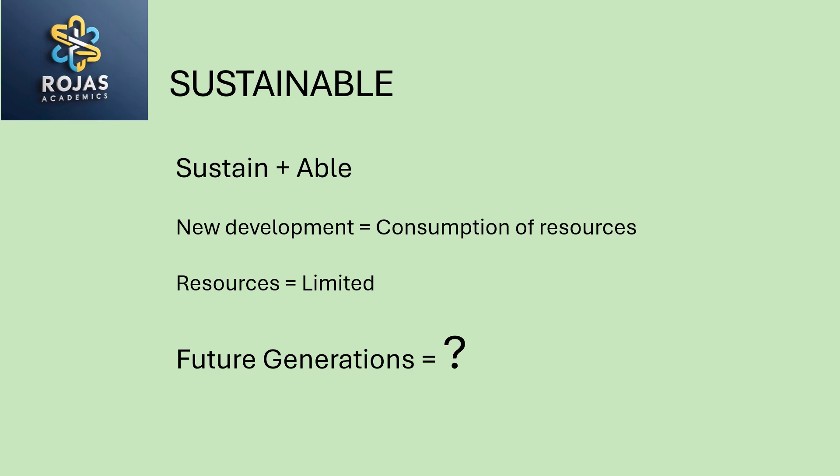So friends, what do you mean by the word sustainable? Word sustainable se aap kya samajhte hain? As you can see, the word sustainable is made up of two words — sustain plus able. Means, which is able to sustain itself for a long time. Jo apne aapko lambe samay tak sustain kar sake.